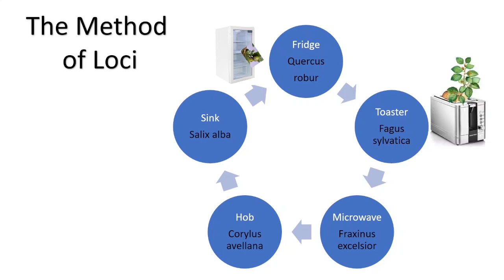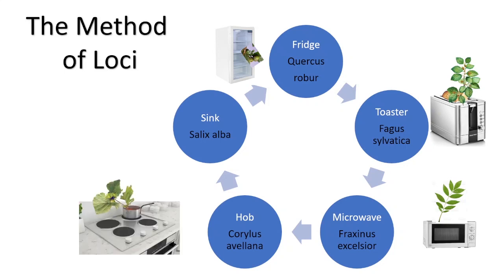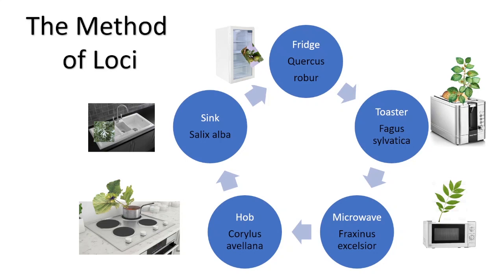You go to the toaster and there's a beech leaf or beech twig growing out of it. Then to the microwave and there's an ash getting cooked up. Then to the hob where we're boiling up hazel and hazelnuts in a saucepan. And then there's the sink where we've got some lovely white willow ready to be washed — because it grows by the water.